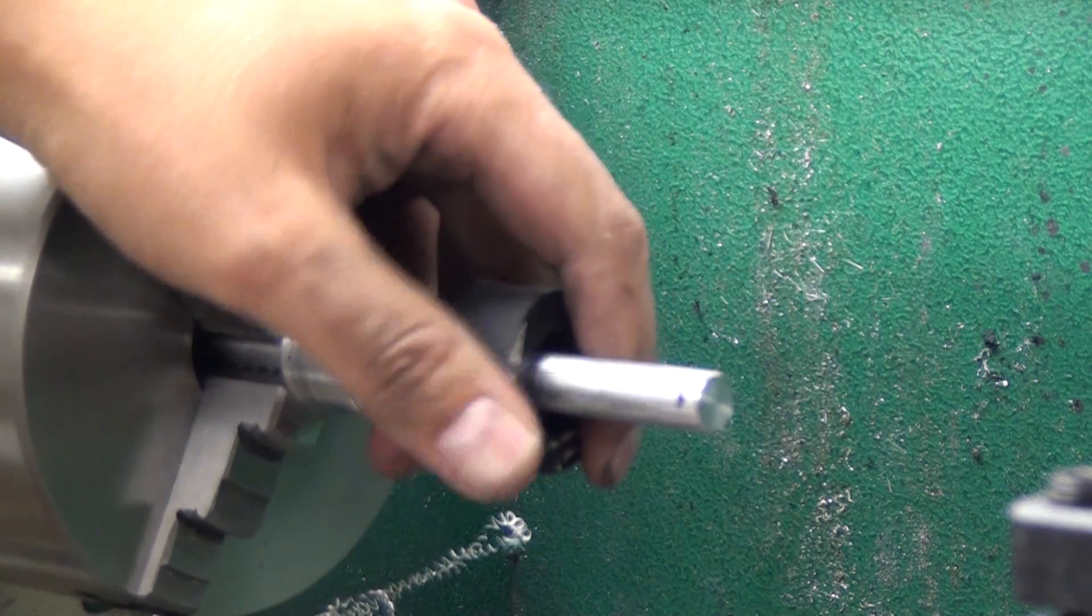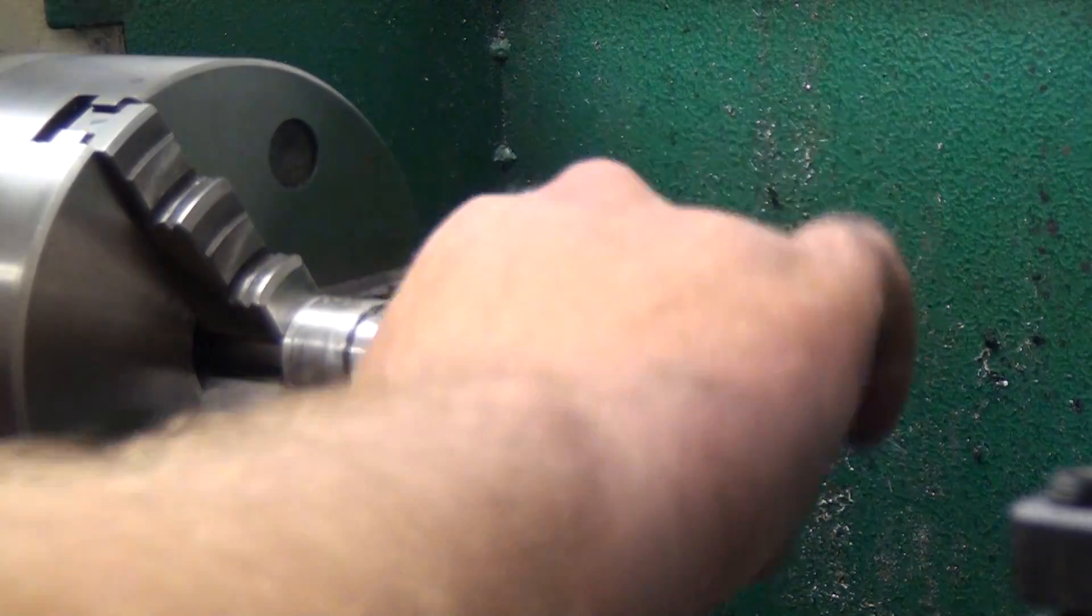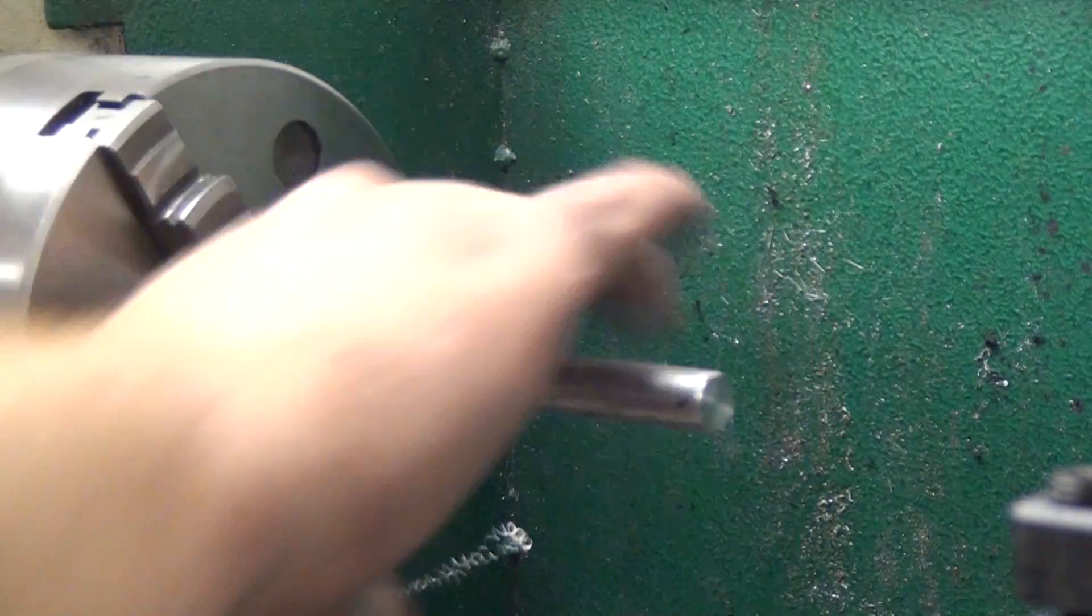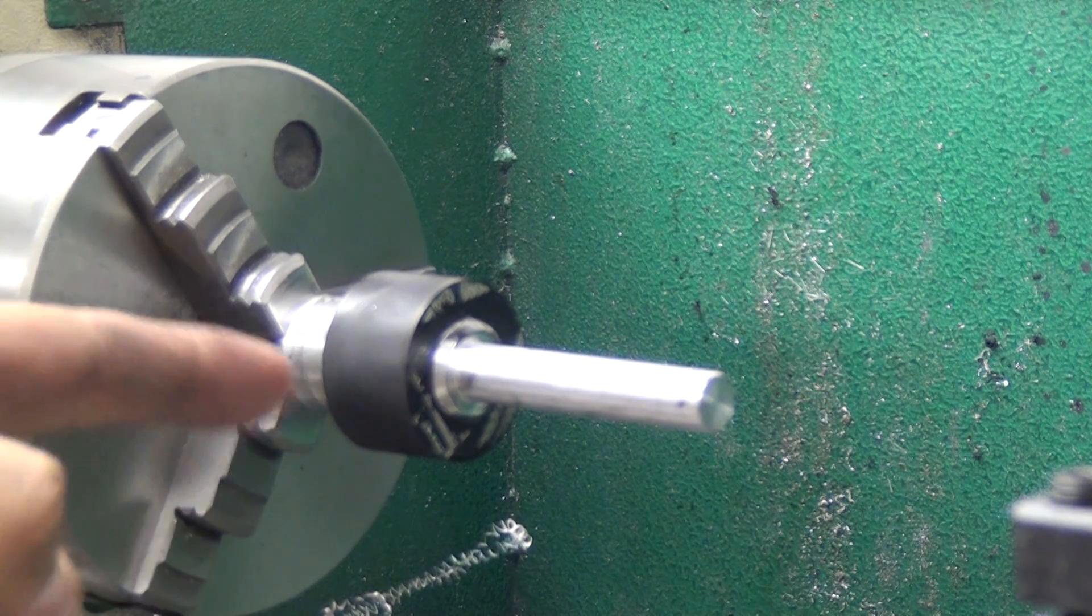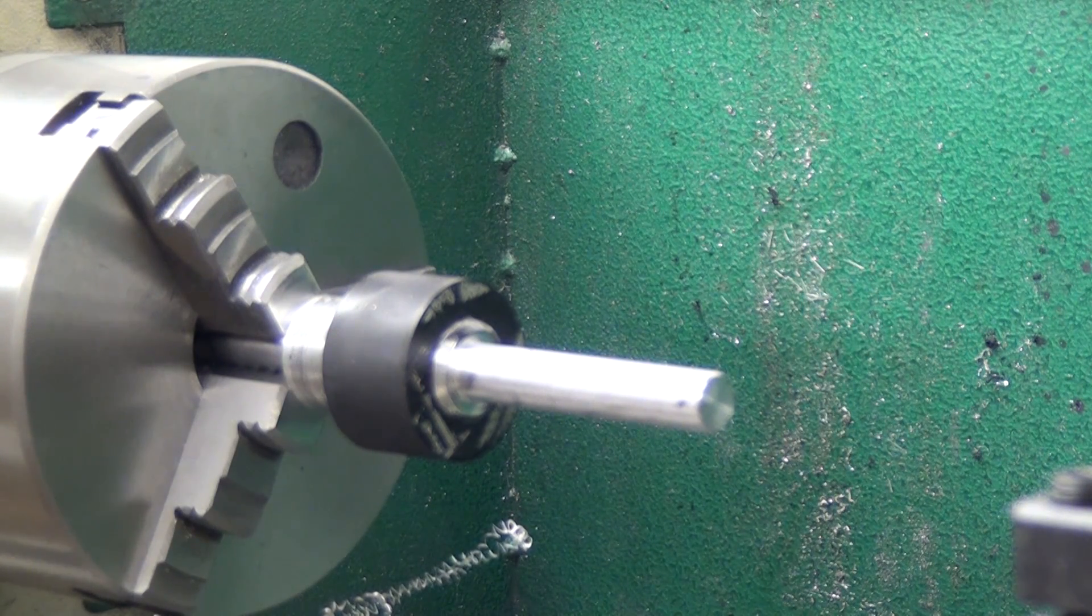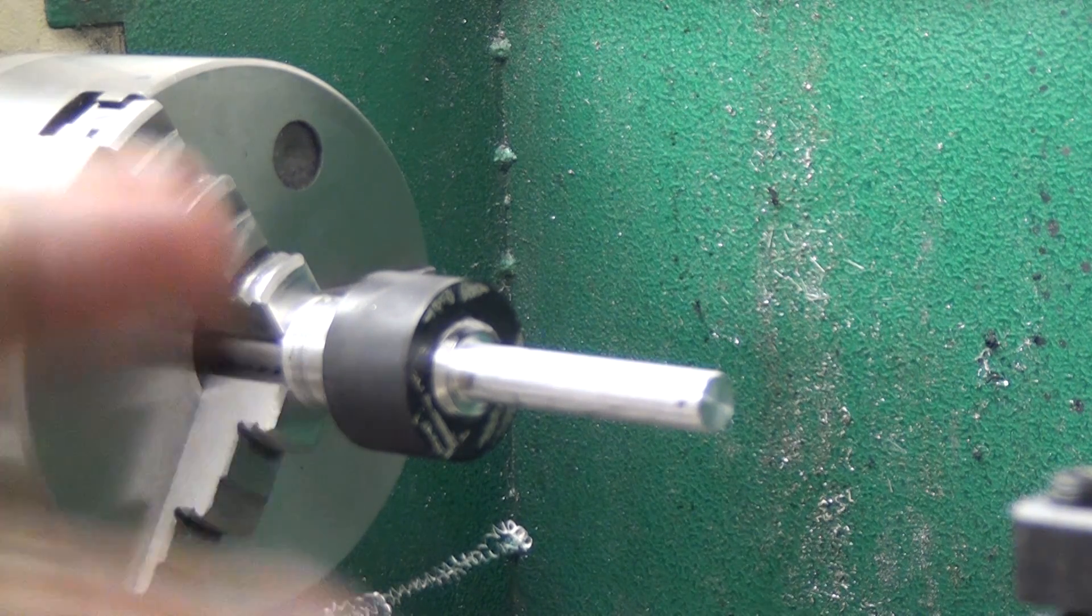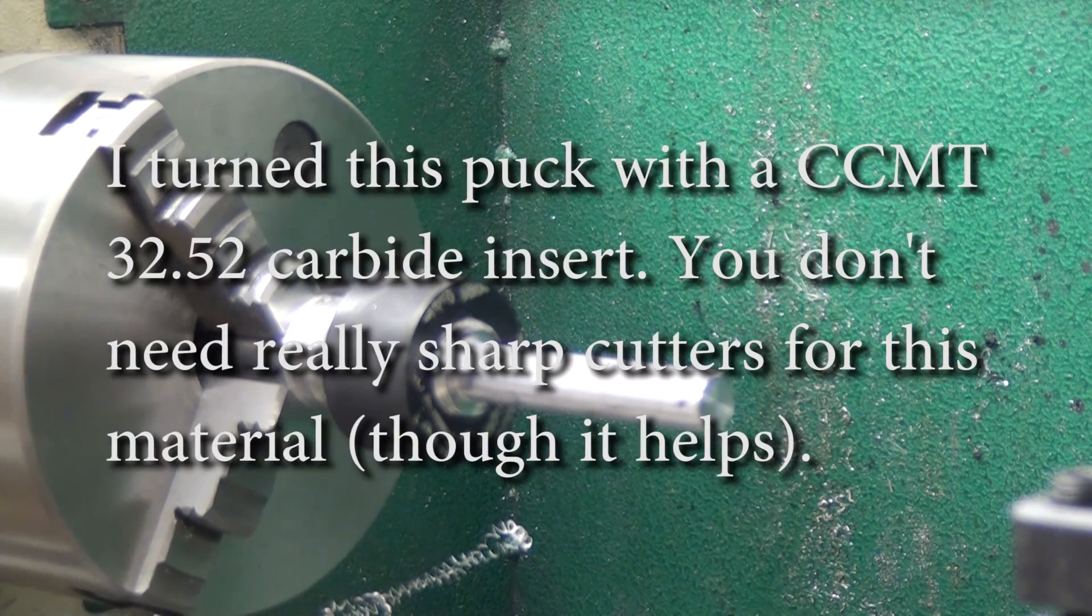And then this slides on here like this real tight and I used a little petroleum jelly to get that on there and then I just turned it down to the diameter I wanted. That way I got a great chucking and I can pull it off and put it back on and it's still running true.